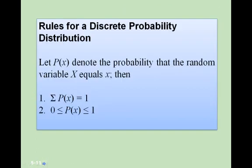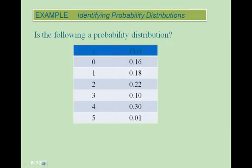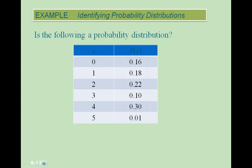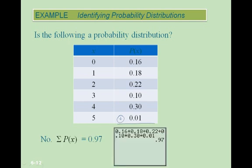There are two rules for a discrete probability distribution. First, the sum of all probabilities must equal 1. Second, each probability must be a value between 0 and 1 inclusive. In this first example, all probabilities are between 0 and 1, but when we sum them we get 0.97, not 1 — so this is not a probability distribution. In the second example, the probability for x equals 5 is negative, which violates the rule that probabilities must be between 0 and 1, so this is also not a probability distribution.